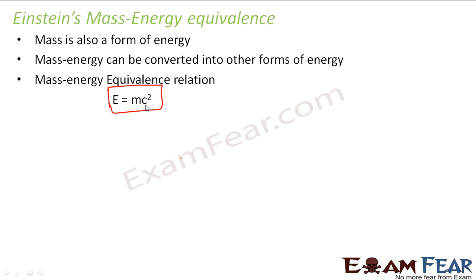So any object which has a mass M has an energy associated with that mass. That energy is not because of its motion or position — it is simply because this object has mass. Anything that has mass has a mass energy associated with it, given as E = MC². This equation became very popular and came to be known as Einstein's mass-energy equivalence.